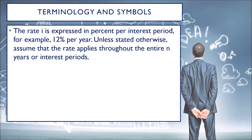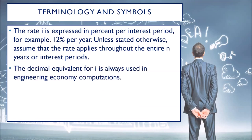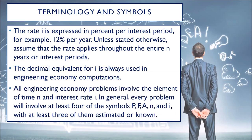The rate I is expressed in percent per interest period — for example, 12% per year. Unless stated otherwise, assume that the rate applies throughout the entire years or interest periods. The decimal equivalent for I is always used in engineering economy computations; for example, 12% per year becomes 0.12. All engineering economy problems must involve the element of time and the interest rate I. In general, every problem will involve at least four of the symbols P, F, A, N, and I, with at least three of them estimated or known.